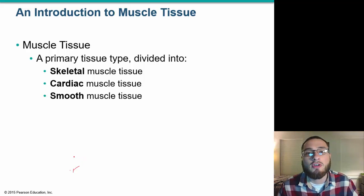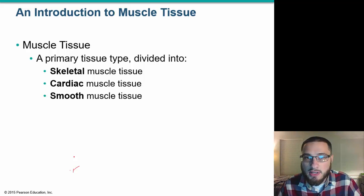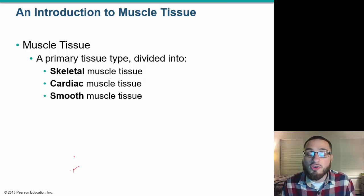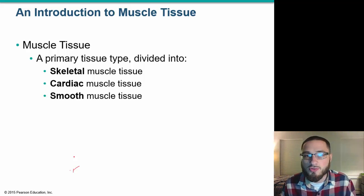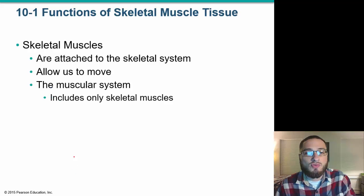Welcome to Biology Minds. Today we're going to talk about muscle tissue. Before we get into the muscle anatomy, we talk about just muscle as a tissue. There are three different types of muscle tissue: skeletal muscle tissue, which is what we mainly talk about in college anatomy and physiology, and then cardiac muscle tissue and smooth muscle tissue as well.